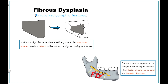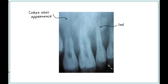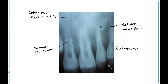Superior displacement of the inferior alveolar nerve canal is another typical finding of FD. In case of other lesions, the canal is usually displaced inferiorly. The lamina dura of the teeth in the affected areas of the bone becomes indistinct, and the PDL space may appear to be very narrow. FD can displace teeth and interfere with normal eruption, and remember that root resorption is very rare in that case.